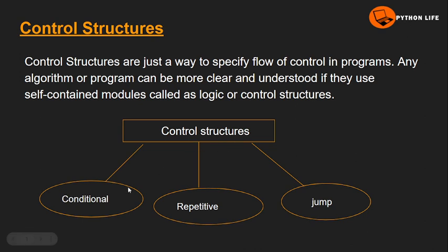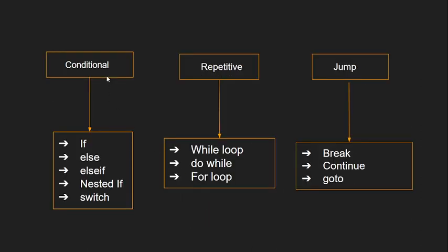There are three types of control structures: conditional statements, repetitive statements, and jump statements. Repetitive statements are looping statements. Conditional statements are based upon conditions — depending on the condition, a statement is executed. Repetitive statements include while loop, do-while loop, and for loop.